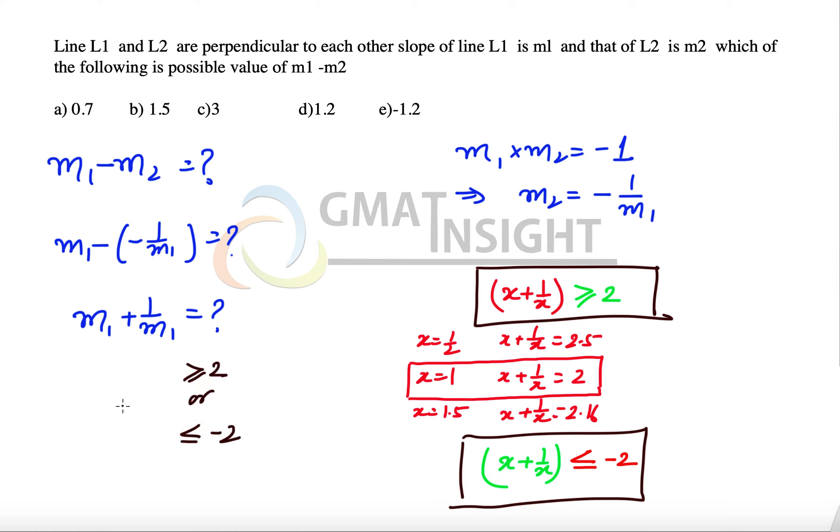That means m1 plus 1 over m1 cannot assume any value between minus 2 and plus 2. So any value between minus 2 and plus 2 can straight away be ruled out.